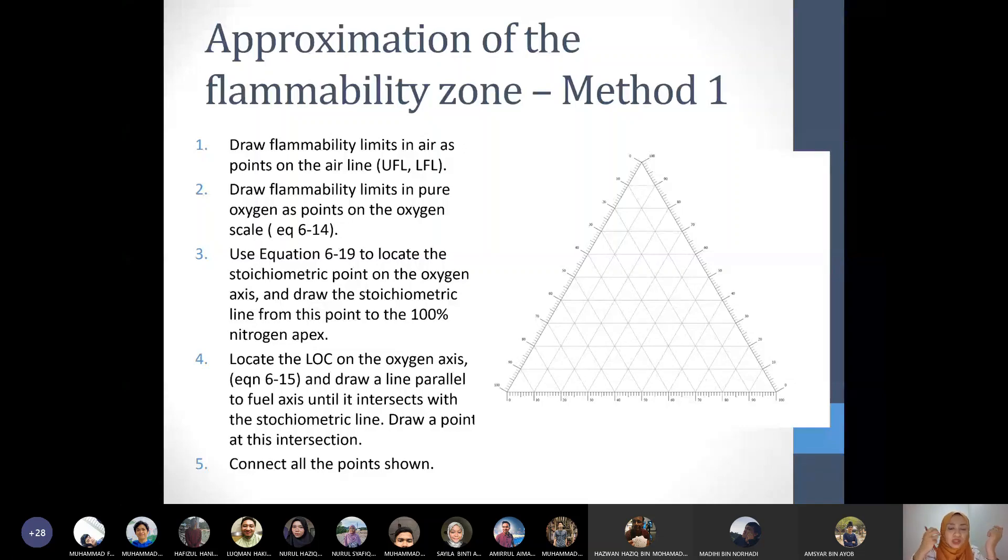First, we need to draw the airline. The airline is always drawn from 79 percent nitrogen. So 79 percent is right there. Down here is always nitrogen, the inert gas. Around here is your oxygen, and right here is your fuel.